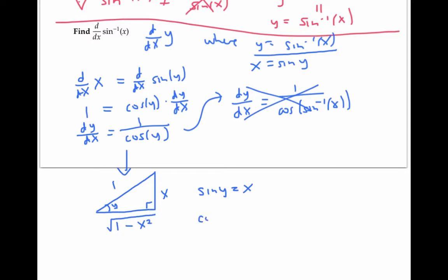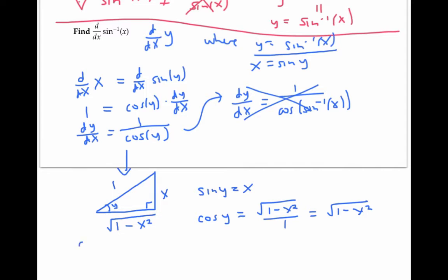Now I can compute cosine of y just from the triangle: cosine of y is adjacent over hypotenuse, so that's the square root of one minus x squared over one, or just the square root of one minus x squared. I've been assuming y is a positive angle between zero and pi over two when drawing this triangle, but you can check that the same formula also works if y is a negative angle. So substituting back, dy/dx equals one over the square root of one minus x squared — the formula for the derivative of inverse sine of x.